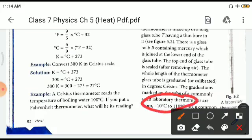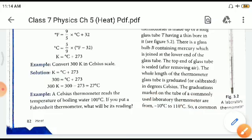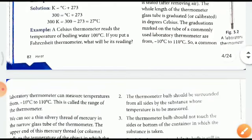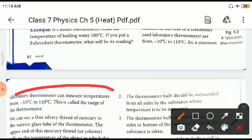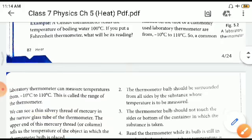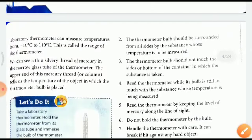The graduation marks on the tube of a commonly used laboratory thermometer are from minus 10 degrees to 110 degrees Celsius. This is something which you need to learn—minus 10 to 110 degrees Celsius. This is called the range of the thermometer. We can see a thin silvery thread of mercury in the narrow glass tube of the thermometer. The upper end of the mercury thread tells us the temperature.